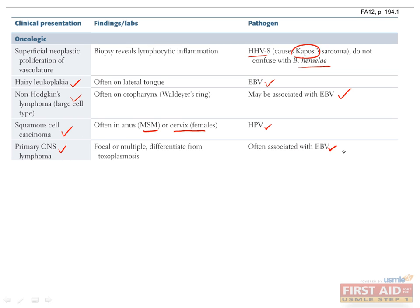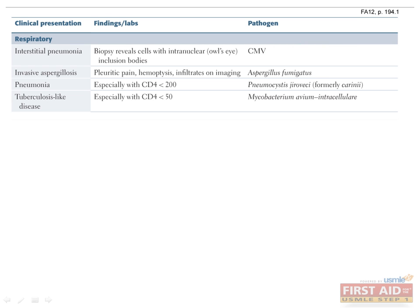Primary CNS lymphoma is often also associated with EBV — make sure to distinguish it from toxoplasmosis, which can have the same ring-enhancing appearance on imaging. The lungs may also be affected: interstitial pneumonias are caused by CMV; invasive aspergillosis by Aspergillus; pneumonia by Pneumocystis jirovecii; and tuberculosis-like disease by Mycobacterium avium intracellulare. Pneumocystis jirovecii pneumonia occurs at CD4 counts less than 200 — give TMP-SMX for prophylaxis. MAI occurs at CD4 counts less than 50 — give azithromycin for prophylaxis.